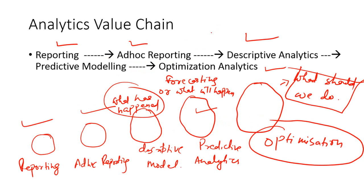By learning predictive analytics, you actually move up in the analytics value chain. The analytics value chain is perceived to start from reporting. Then the next step is ad-hoc reporting, which involves more dynamic reports and business intelligence. Then descriptive analytics, which is about doing analytics on historical data to understand what has happened and find relations between variables without worrying about what will happen in future. Predictive analytics is about extrapolating the patterns in historical data to the future — in other words, forecasting.